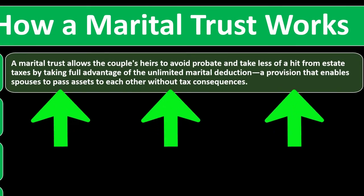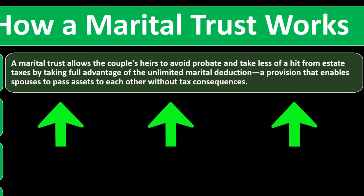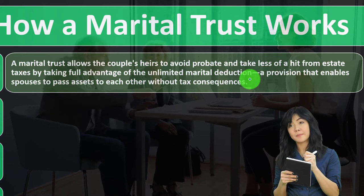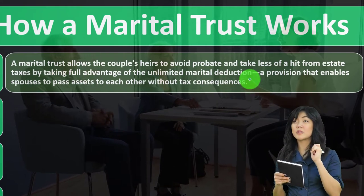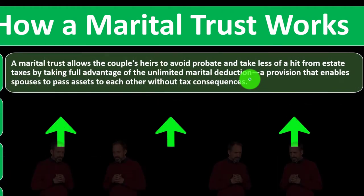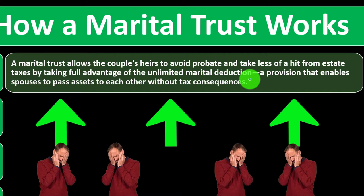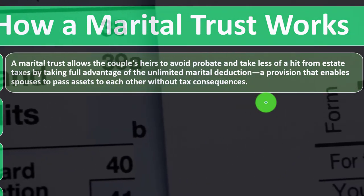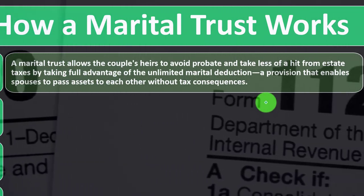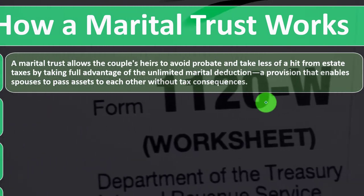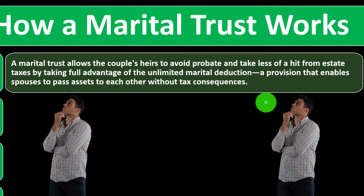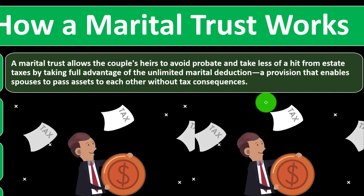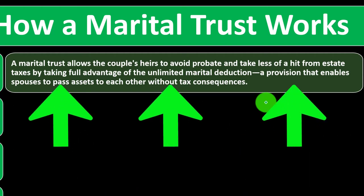How a marital trust works: a marital trust allows the couple's heirs to avoid probate and take less of a hit from estate taxes by taking full advantage of the unlimited marital deduction. Similar to a living trust, it makes it easier to go through the probate process because the entity existed before the death. You want to make sure you take full advantage of the unlimited marital deduction so money passes from one spouse to the other without being hit with estate taxes.